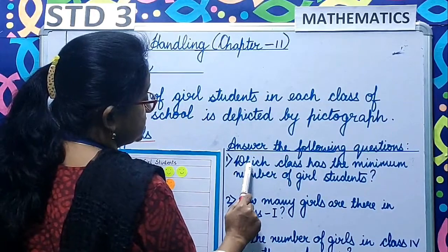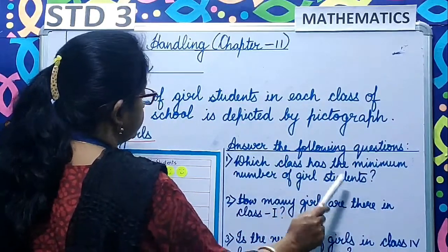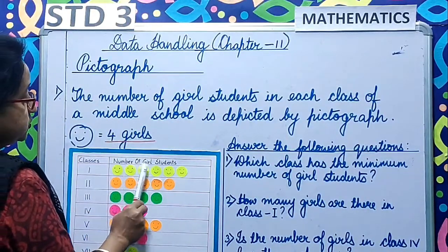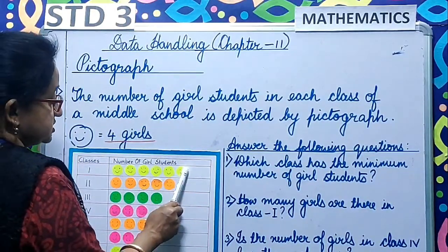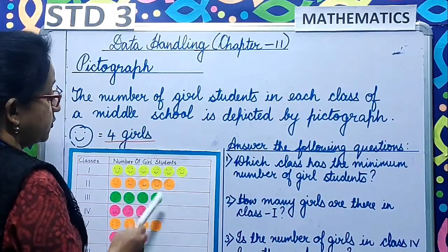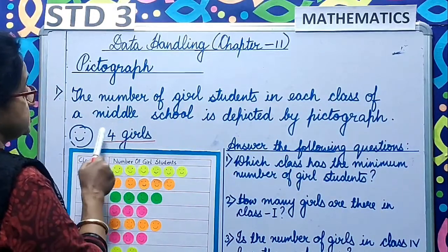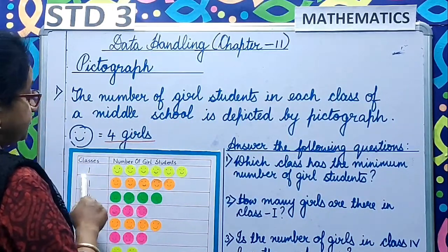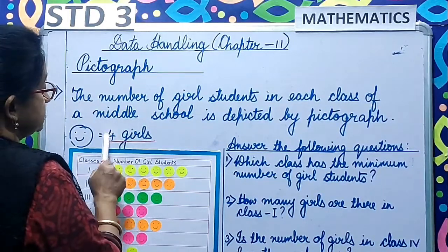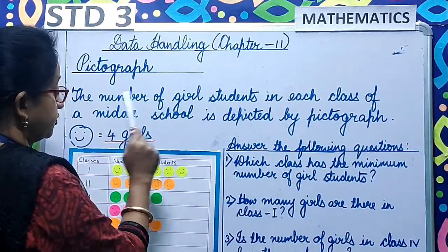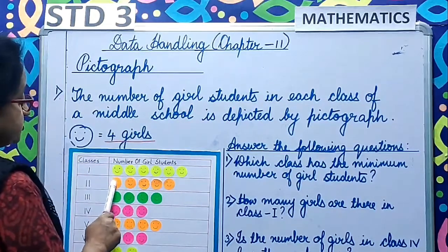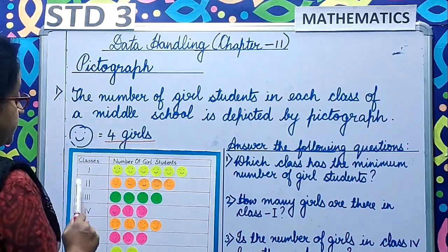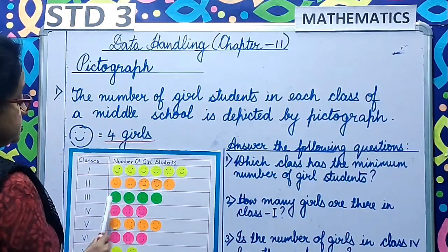The first question is: which class has the minimum number of girl students? Class 1 has 6 smileys. Is that the correct number? No. We have to multiply this with 4 to get the exact number. So 6 into 4 means this class has 24 girl students. Class 2 has 5 smileys: 5 into 4 gives 20 girl students.